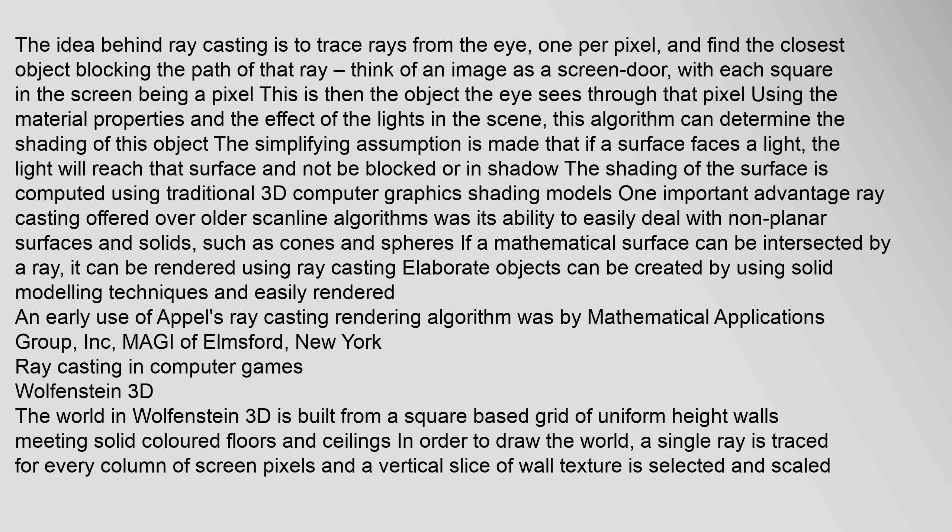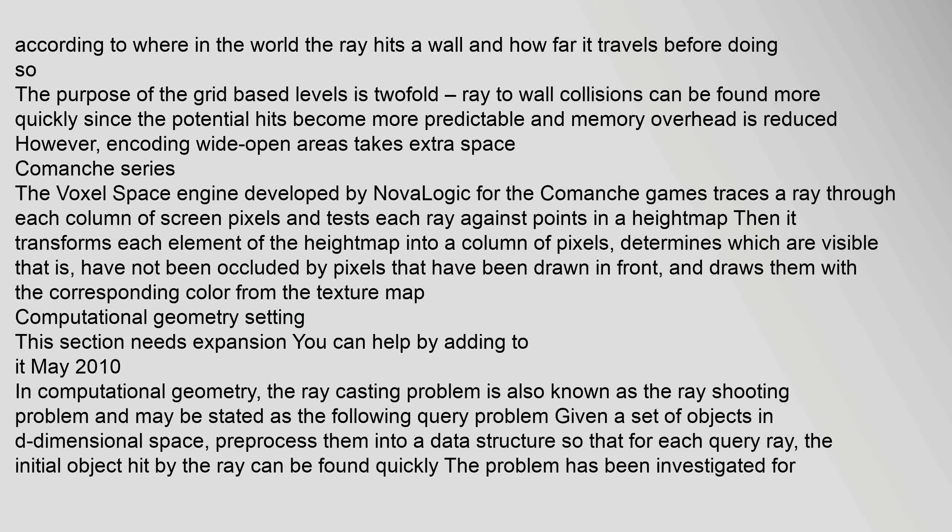Ray casting in computer games: Wolfenstein 3D. The world in Wolfenstein 3D is built from a square-based grid of uniform height walls meeting solid colored floors and ceilings. In order to draw the world, a single ray is traced for every column of screen pixels, and a vertical slice of wall texture is selected and scaled according to where in the world the ray hits a wall and how far it travels before doing so. The purpose of the grid-based levels is twofold: ray-to-wall collisions can be found more quickly since the potential hits become more predictable, and memory overhead is reduced. However, encoding wide open areas takes extra space.